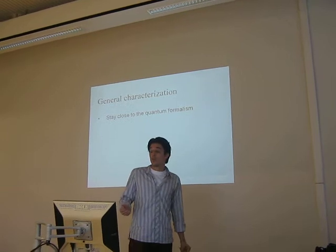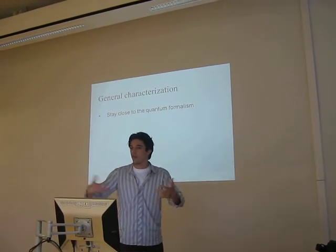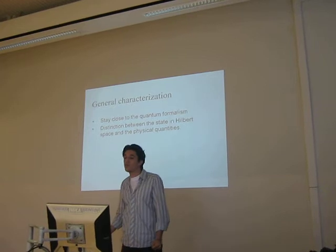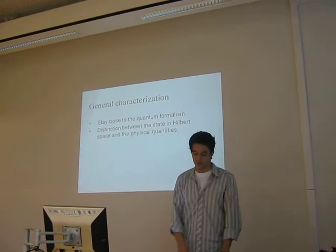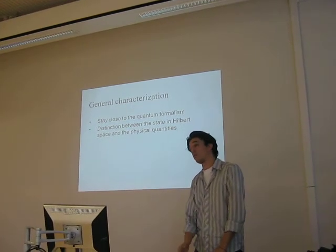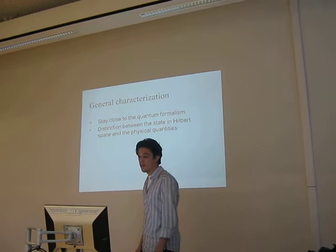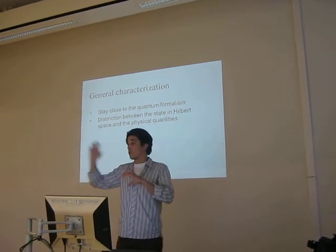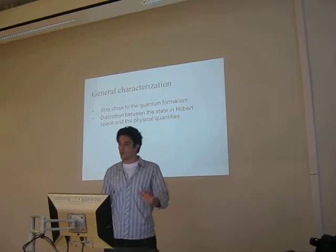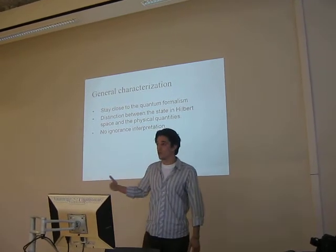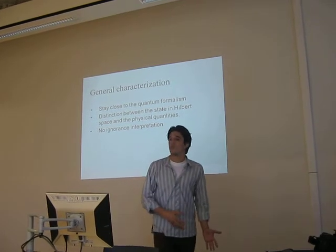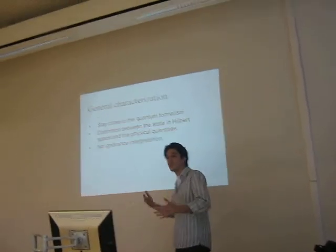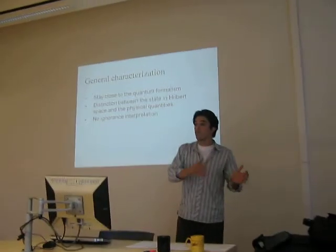One of the strong points of modal interpretation is to stay close to quantum formalism — not to add anything by hand. There is a distinction between the state in state space and physical quantities. For example, in Van Fraassen it is between a dynamical state and a value state; in Dieks-Perais between what they call mathematical and physical states. So there are two levels of description regarding possibility. It is not an ignorance interpretation — when we have the state of the system that is all there is to know, and we should not look for hidden variables which would give us more information.